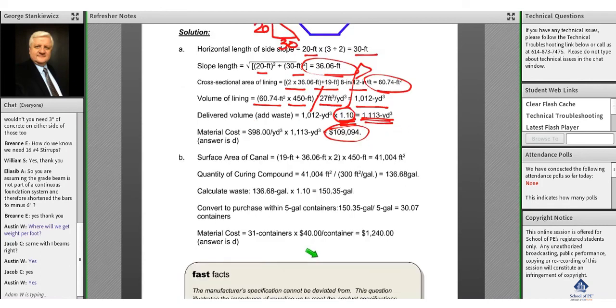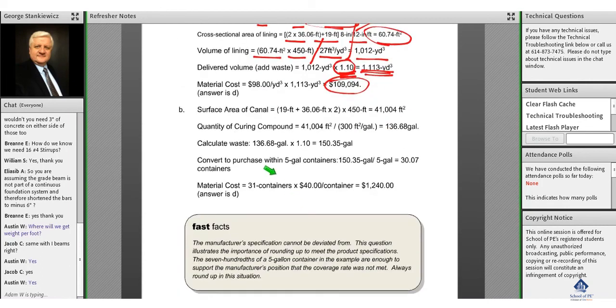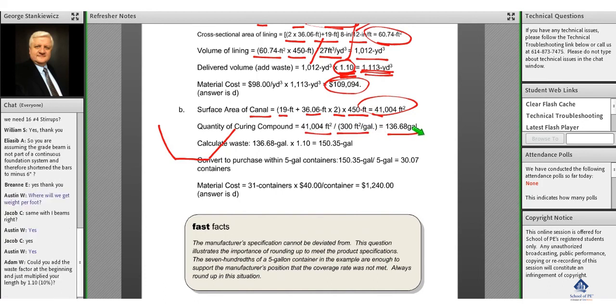Let's continue with our analysis and find the curing compound. The curing compound is the surface of the canal - that trapezoidal shape that we have - multiply that by 450, so we have 41,000 square feet. The quantity of the curing compound, divide that out by the 300 square feet per gallon, is 163 gallons. We're going to add the 10% as we've done. We remember that, and when we do that, we can only buy it per a five-gallon pail, so we come up with 30.07.